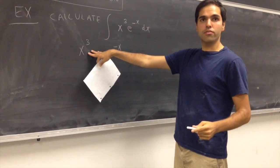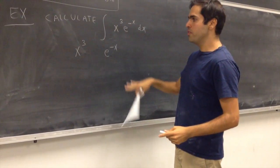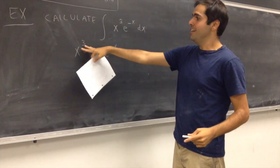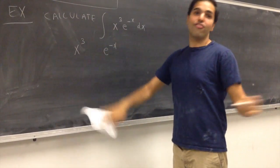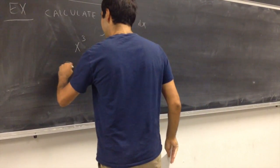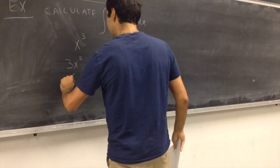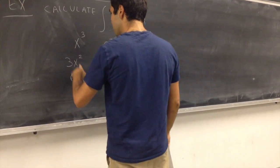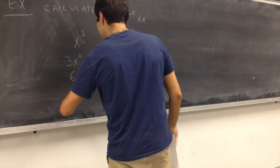On the first column, you put one function. The other one, you put the other function. And then, for the left side, you differentiate the hell out of it. You differentiate as many times until you get zero. So, x cubed, 3x squared, 6x, 6 and zero.